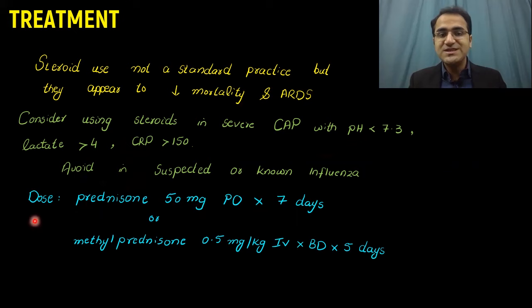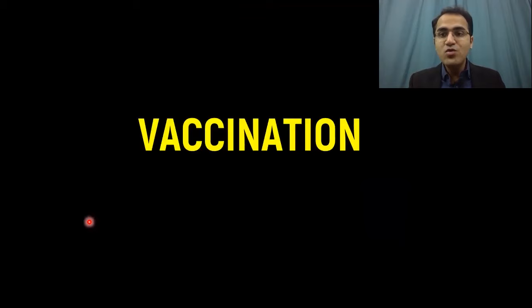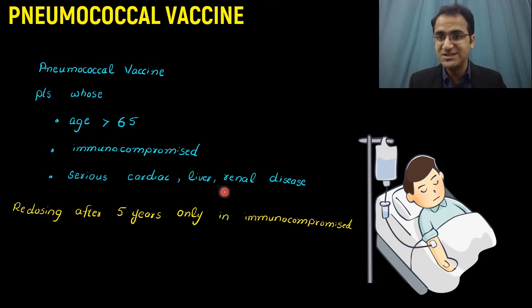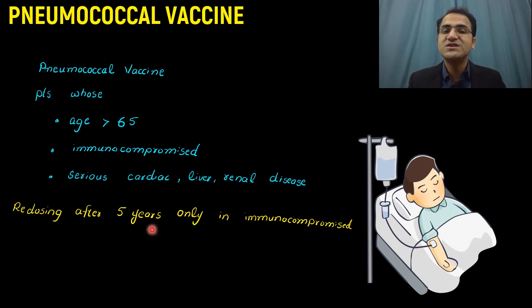Regarding vaccination: the pneumococcal vaccine is indicated for patients aged greater than 65, immunocompromised patients, and those with serious underlying cardiac, liver, or renal diseases. If the patient meets any of these conditions, they must be vaccinated. For immunocompromised patients, consider re-dosing after 5 years. For everyone else over 65, one dose is sufficient.